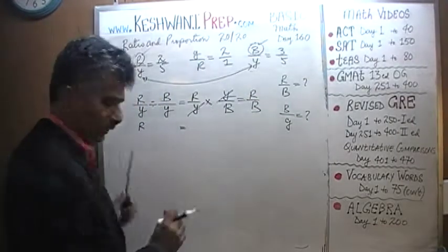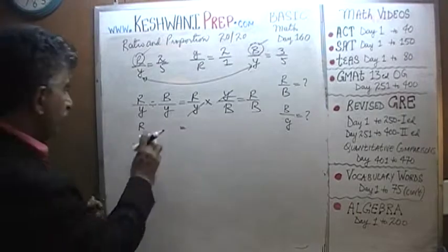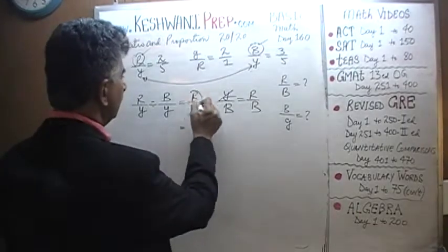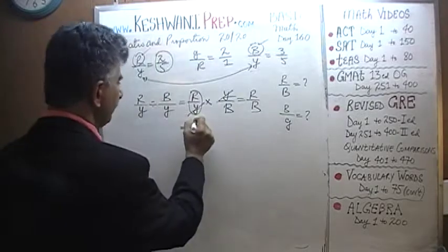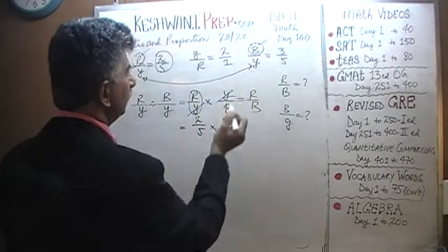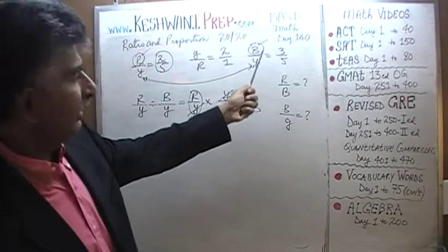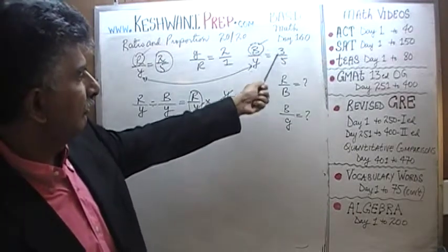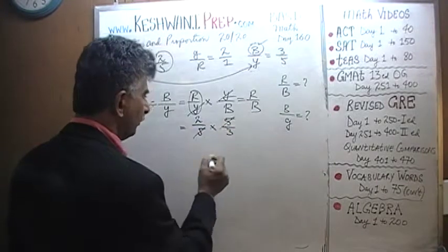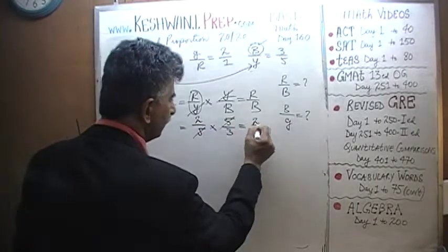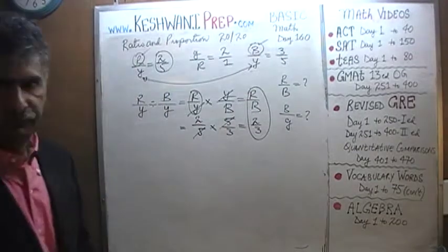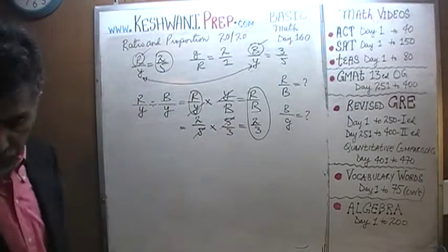Now we simply plug in our numbers. Red to yellow we know is 2/5. This is blue to yellow, so yellow to blue is going to be 5 to 3. The 5s cancel and we end up with 2/3. Red to blue is 2/3. That's it — red to blue is figured out.